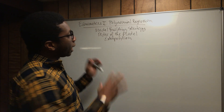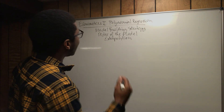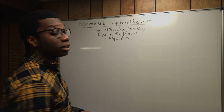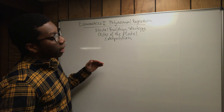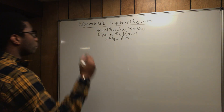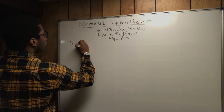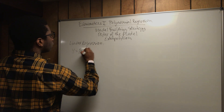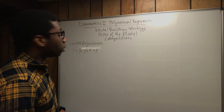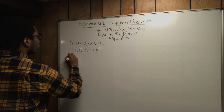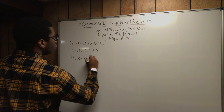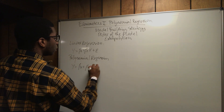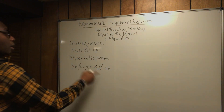Today we're going to talk about a model building strategy, order of the model, and extrapolation. But before I dig into this, just a quick review: last time we saw that polynomial regression is based on classical linear regression, but the only difference is that polynomial regression takes a curvilinear trend. The normal linear regression model has y equals beta0 plus beta1 x plus the error term. When we talk about polynomial regression, it goes with y equals beta0 plus beta1 x plus beta2 x-squared plus the error term.